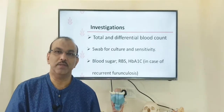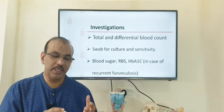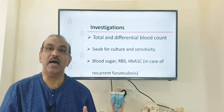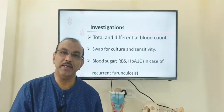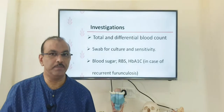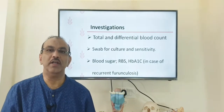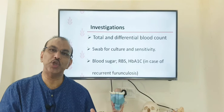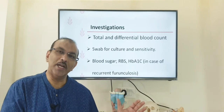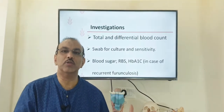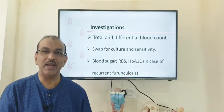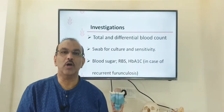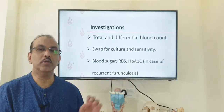If the patient gives a history of repeated furunculous, we need to check blood sugar to determine if they are diabetic. If they are already on tablets or insulin, we should know the current blood sugar level and also assess the last three months' control by doing a Hemoglobin A1c, also known as glycosylated hemoglobin.